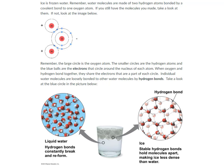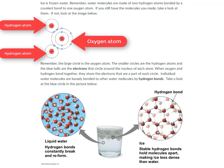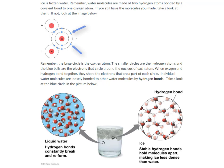Remember, the large circle is the oxygen atom. The smaller circles are the hydrogen atoms, and the blue balls are the electrons that circle around the nucleus of each atom. When oxygen and hydrogen bond together, they share the electrons that are part of each circle.